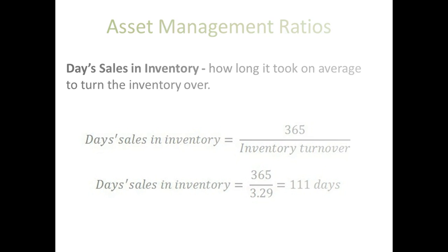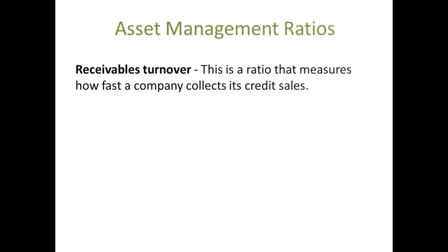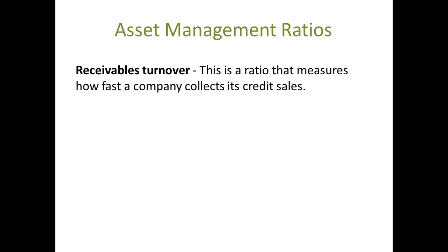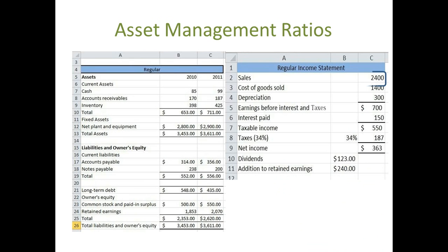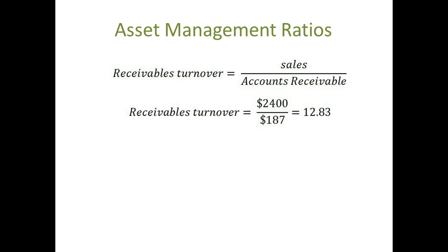Receivables Turnover and Days Sales in Receivables. The Receivables Turnover Ratio measures how fast a company collects its credit sales. It is calculated as Sales divided by Accounts Receivable. In our example, we have $2.4 million in sales and our Accounts Receivable is $187,000. This gives us a Receivables Turnover of 12.83. Loosely, this is saying that we collected our outstanding credit sales and lent them out again 12.83 times.